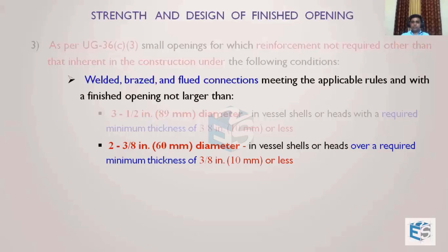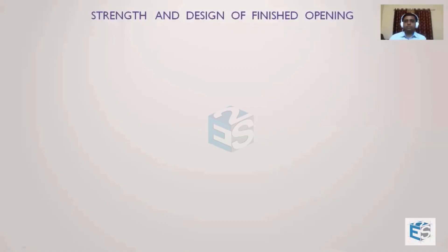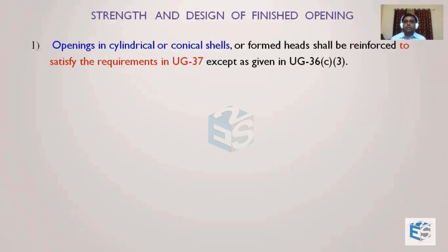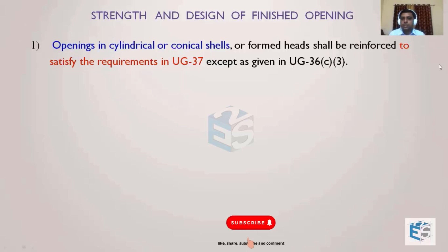To clarify, the 'required thickness' refers to the thickness calculated by the pressure formula — not the nominal thickness. If the required thickness is less than 10 mm, the 89 mm diameter is the criterion for a small opening. If it is more than 10 mm, meaning higher pressure, then only openings up to 60 mm diameter qualify. For cylindrical, conical shells, or formed heads, all other nozzles must satisfy the reinforcement requirements of UG-37.